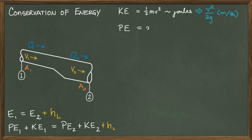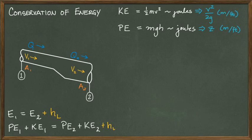Next, potential energy is defined as mass times gravity times the height of the column of fluid acting on a point. This expression can also be converted to just the elevation in meters or feet. And that is where the conversation about energy conservation usually stops in a typical physics course — kinetic energy is velocity, and potential energy is elevation.